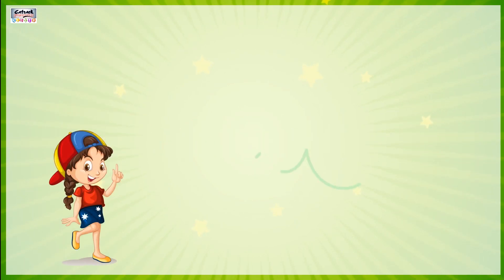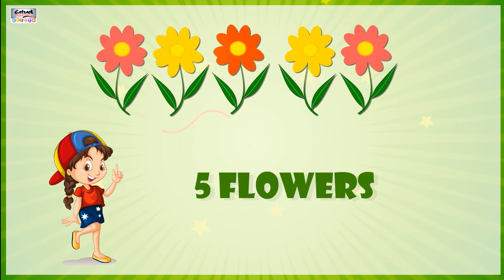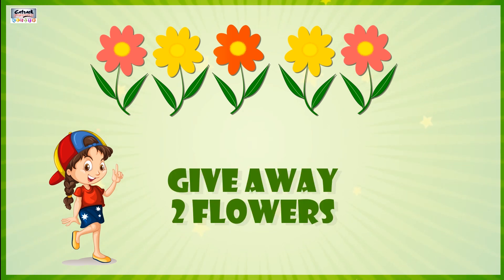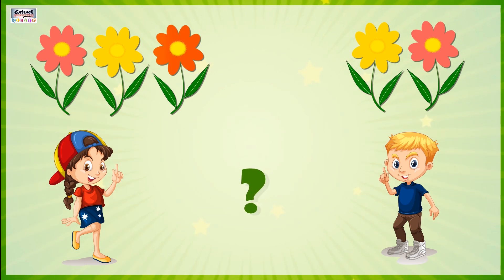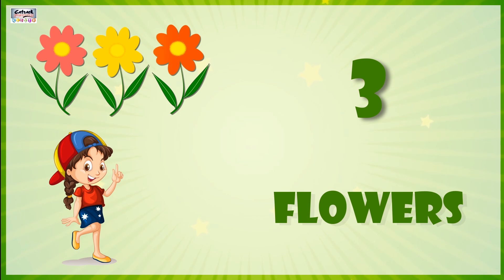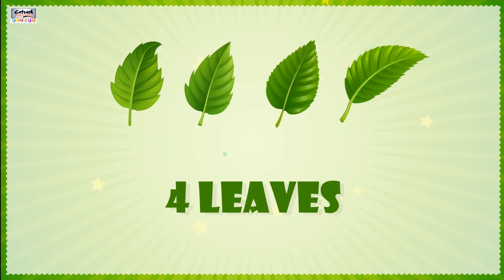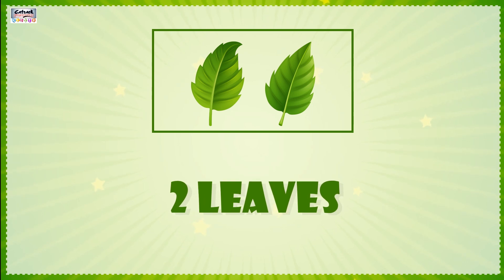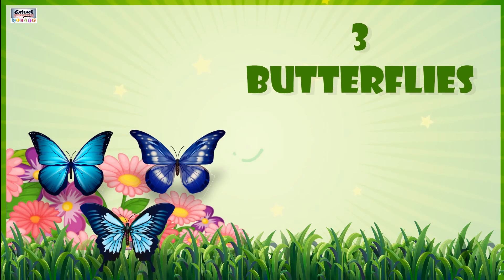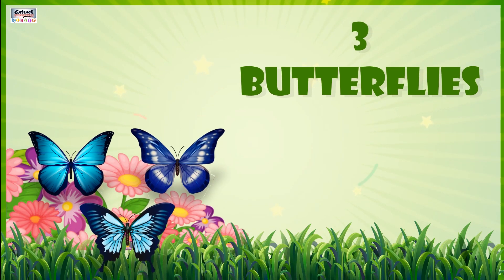Nina has 5 flowers. If she gives away 2, how many flowers will be left? Answer: 3 flowers. Out of 4 leaves, if we take away 2, then 2 leaves are left. There are 3 butterflies sitting on a flower.